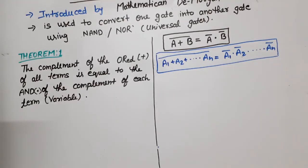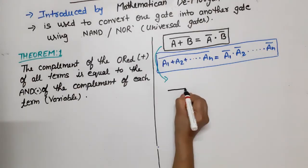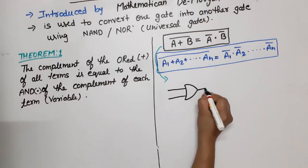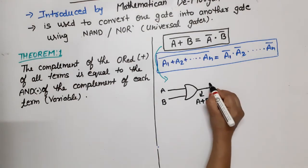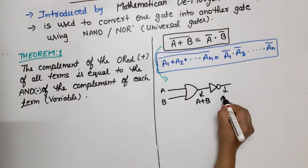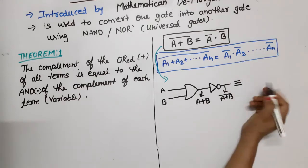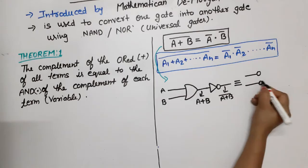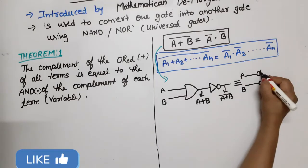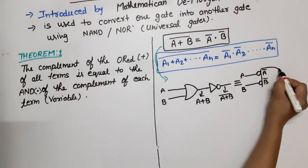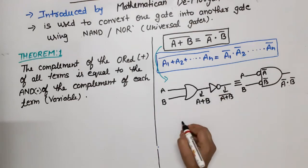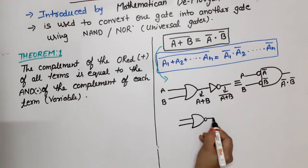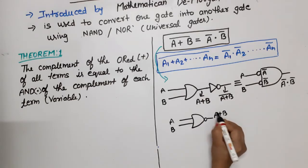Now if we show this in the form of a circuit with two variables: first we have an OR gate with inputs A and B, giving output A plus B. Then this output is passed through a NOT gate, giving us (A plus B) bar. This is equivalent to a NOR gate. The right-hand side shows taking complements of A and B individually — giving A bar and B bar — and then ANDing them to get A bar dot B bar. This circuit can be replaced by a single NOR gate.